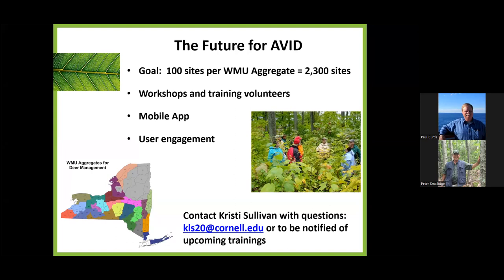The most important thing is getting out in the woods and looking, knowing what deer impacts are on your property. Are you seeing browse? Are you seeing a good diversity of species in the deer browse zone — less than six feet in height? Or are you seeing only deer-resistant species? Just taking a walk through the woods and paying close attention, you can learn a lot.